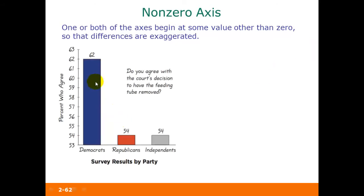Here's a bar graph that gives the percent of those who agreed with a court decision to have a feeding tube removed. This is split up between political parties: Democrats, Republicans, and Independents. Just looking at this graph, it looks like a much higher percentage of Democrats agreed with the court's decision than Republicans or Independents.